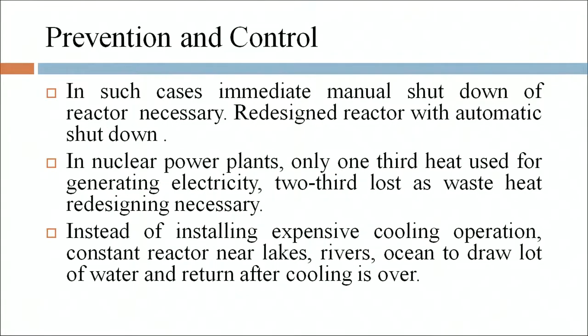Prevention and control: in such cases, immediate manual shutdown of the reactor is necessary. Reactors should be redesigned with automatic shutdown. In nuclear power plants, only one-third of heat is used for generating electricity, while two-thirds are lost as waste heat, making redesigning necessary instead of installing expensive cooling operations. Reactors should be sited near lakes, rivers or oceans to draw large amounts of water for cooling.